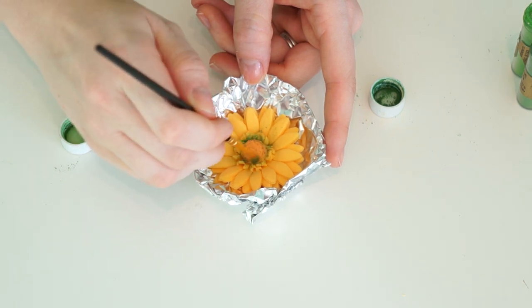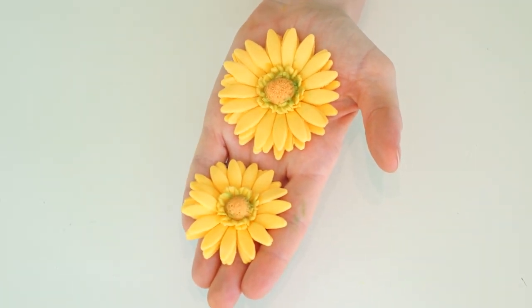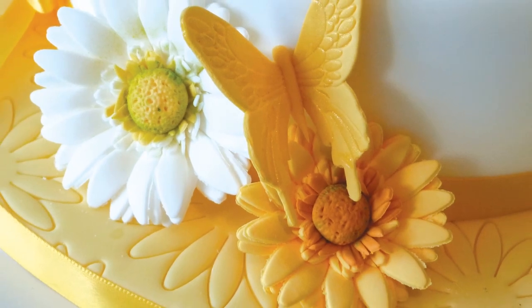And there you have your gerbera flowers. Now once they completely dry, what you want to do is just put a bit of edible glue on the back and then you can just stick them onto your cakes.